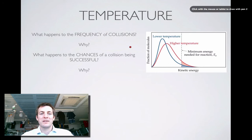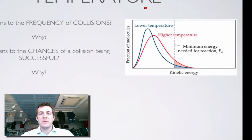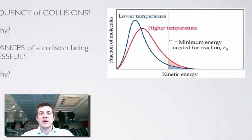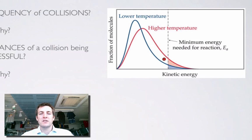Moving on to the third factor: temperature. Cast your mind back to kinetic theory. When we look at a sample at a higher temperature — the red line — compared to a lower temperature — the blue line — the average kinetic energy of the particles has increased, which means they're moving faster, which means they'll collide with each other more often. So the frequency of collisions will increase because the particles are moving faster.